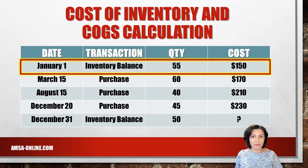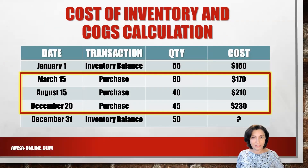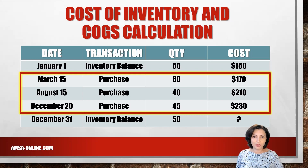The units of an item available for sale during the year have been provided. As of the beginning of the year, the company had 55 units on hand at a cost of $150 each. On March 15th, 60 units were purchased at $170. On August 15th, 40 more units were purchased at $210. And on December 20th, 45 units were purchased at $230.